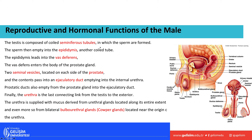Moving to the male reproductive system — the primary organs that produce gametes in males are the testes. Within the testes are coiled seminiferous tubules, where sperm are formed. Once formed, sperm migrate to the epididymis where they mature. From there they move into the vas deferens, which is also called the ductus deferens.